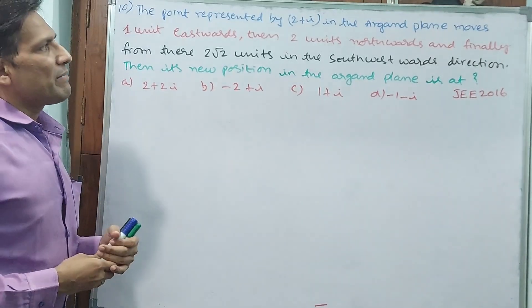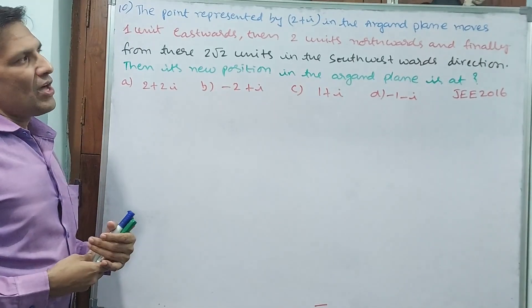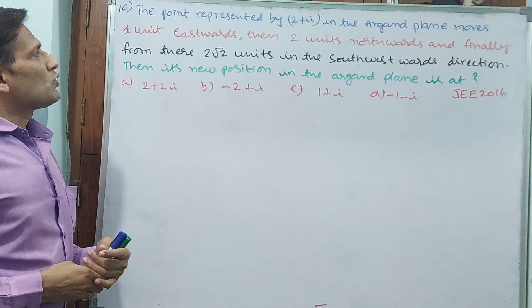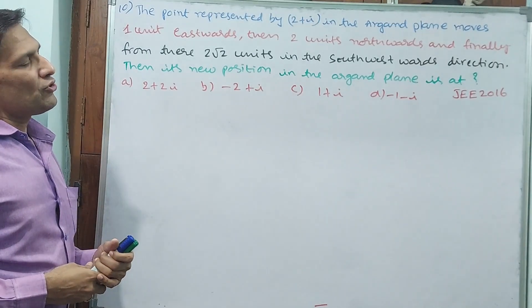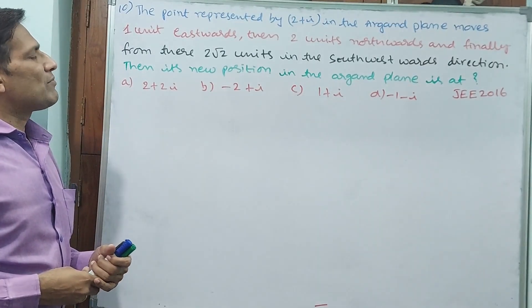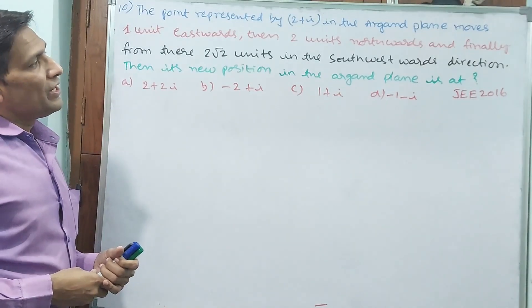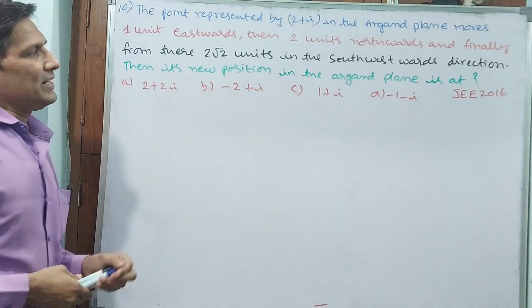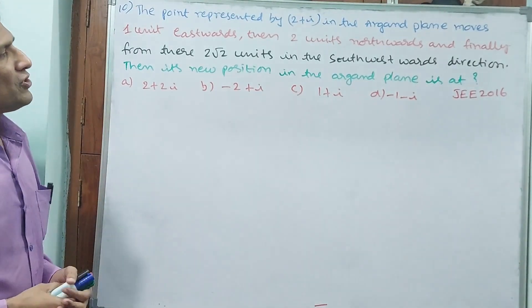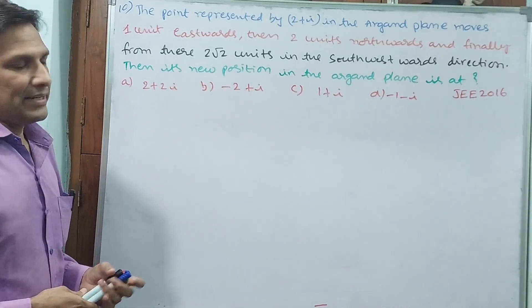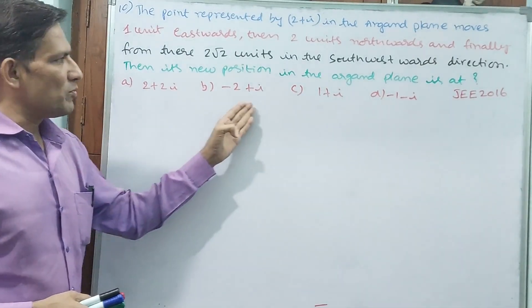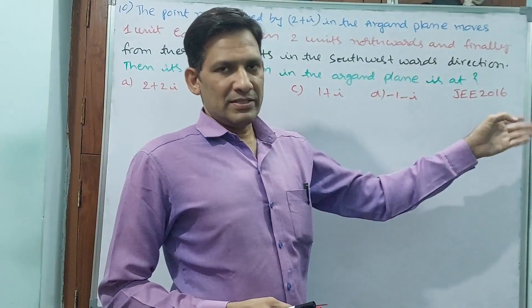The point represented by 2 plus i in the Argand plane moves one unit eastward, then two units northwards and finally from there two units in the southwest direction. Then its new position in the Argand plane is at where: 2 plus 2i, minus 2 plus i, 1 plus i, minus 1 minus i.